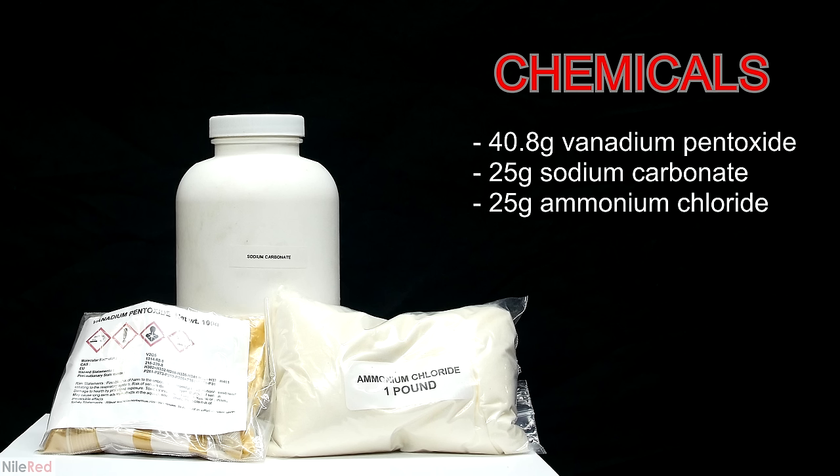To make the ammonium metavanadate we need three main chemicals: sodium carbonate, vanadium pentoxide, and ammonium chloride. Sodium carbonate is pretty easily purchased online or made from sodium bicarbonate, and ammonium chloride is also pretty easy to get. Vanadium pentoxide is a little bit more exotic but it's still pretty easy to get because it's commonly used in pottery and ceramics. I used the video made by The Home Scientist as a rough guideline.